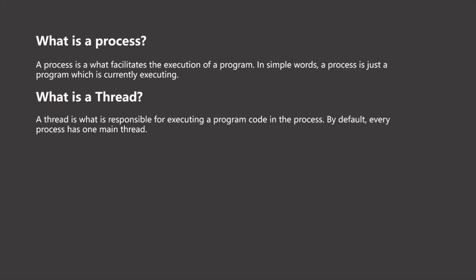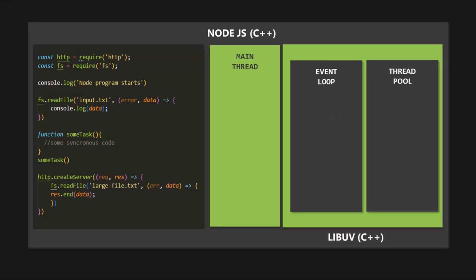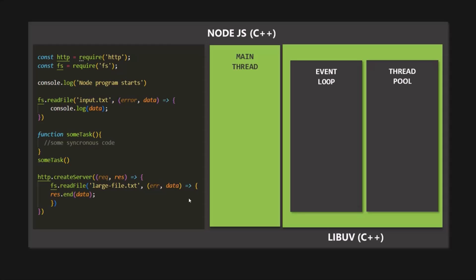This is really important to understand. Let's quickly understand what exactly happens in the single thread when we start our Node application. When we run a Node.js program, all the modules that our Node application needs will be required and imported in the main thread. Then all the top-level code — that means the code which is not inside any callback function — will also be executed in the main thread. So in a program, a console.log statement and a function definition like sumTask, these are top-level code and will be executed in the main thread.